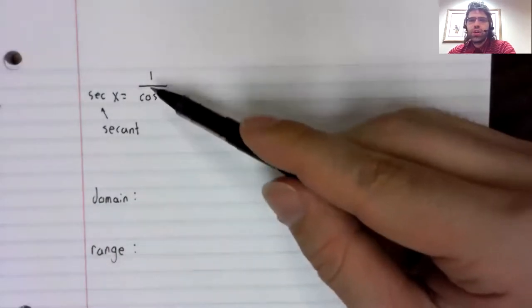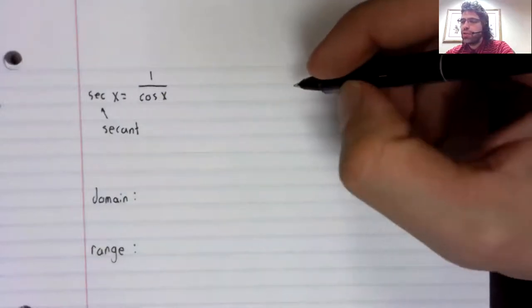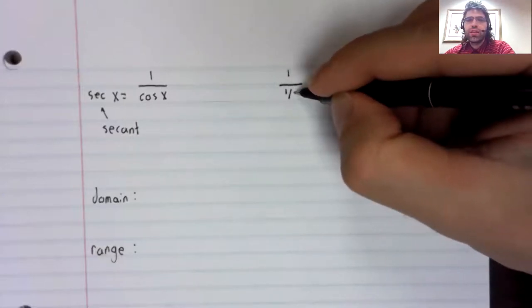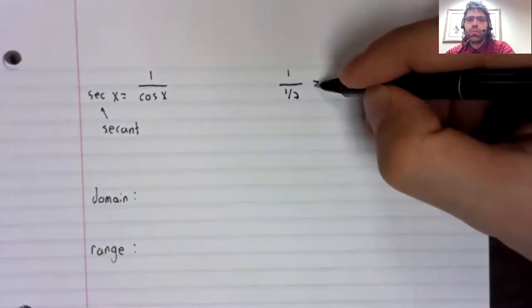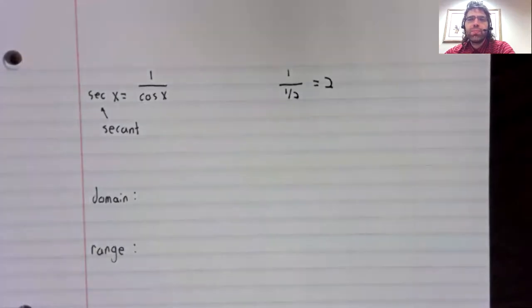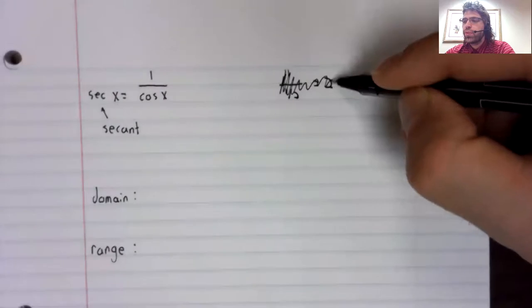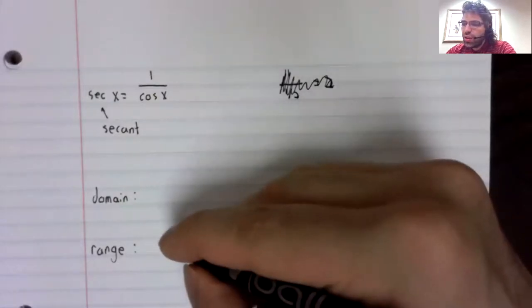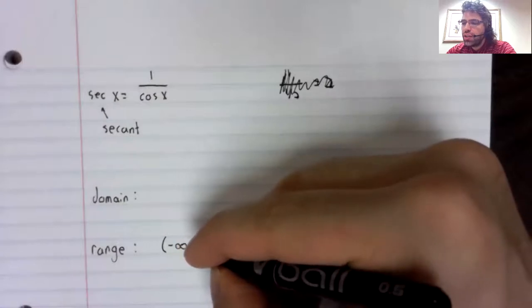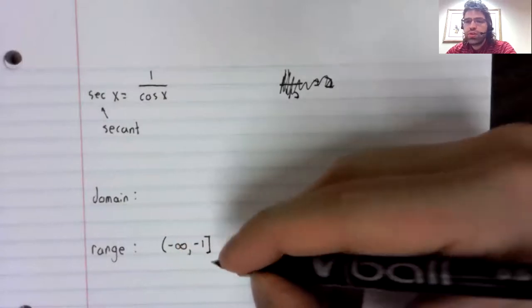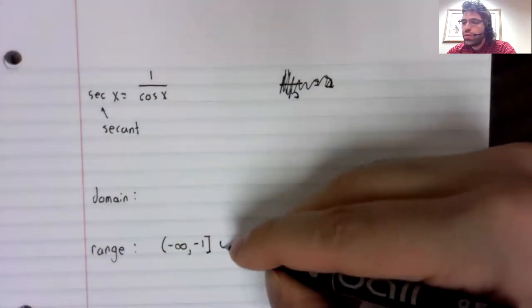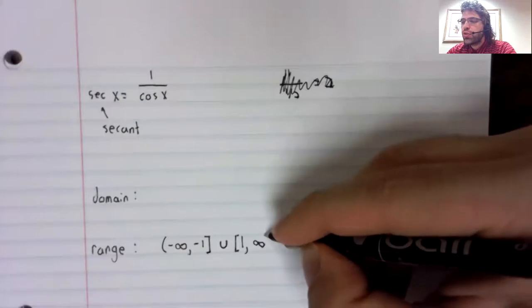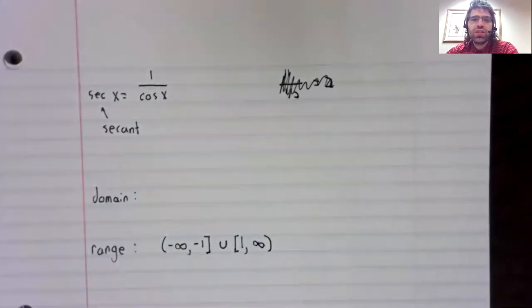If the cosine is between negative one and one, if you take one and divide it by a small number, you get a bigger number, or equal to positive one.